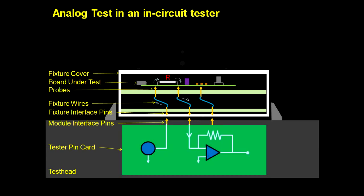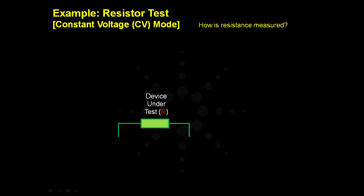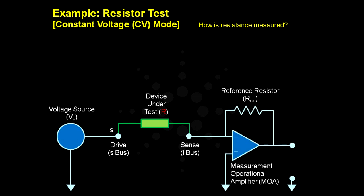To understand better about guarding, let's start with an example of a resistor test setup using a constant voltage source. The resistor is connected between the voltage source VS on the drive or the S bus and the measurement op-amp on the sense or the I bus.